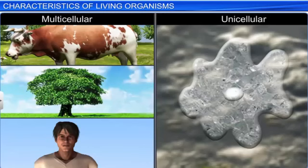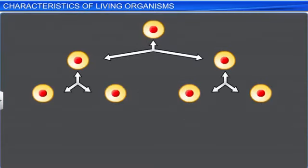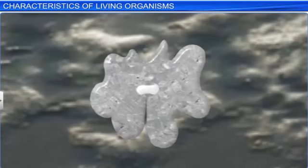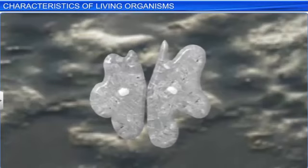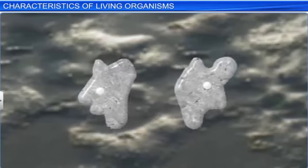However, cell division affects these organisms differently. In a multicellular organism, cell division results in an increase in mass, whereas in a unicellular organism like amoeba, it leads to the formation of two new organisms.